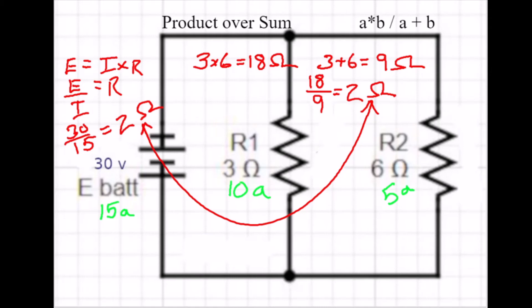You should really memorize that phrase, product over sum, or maybe you like to think of it visually. But product over sum is what you can use to figure out the equivalent resistance of two resistors, and I'll show you how you can do it with more than two resistors in the next video. So, thanks for watching!